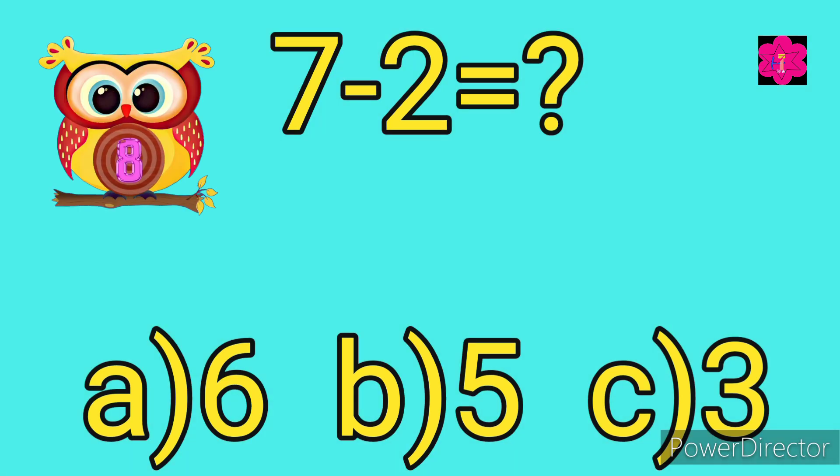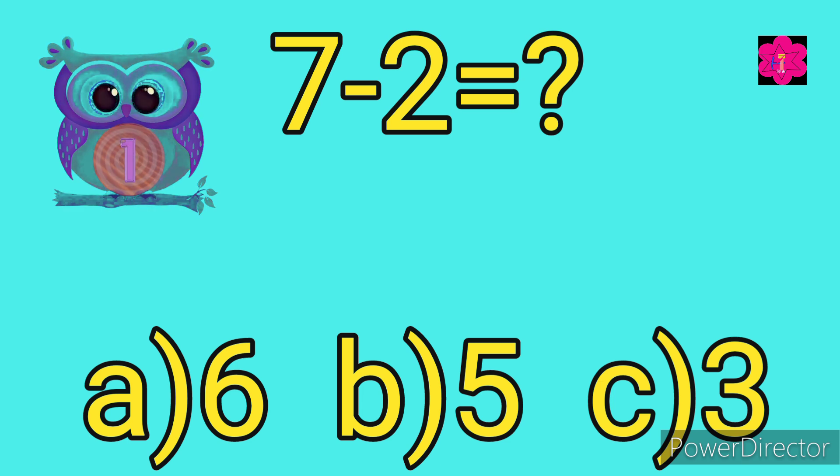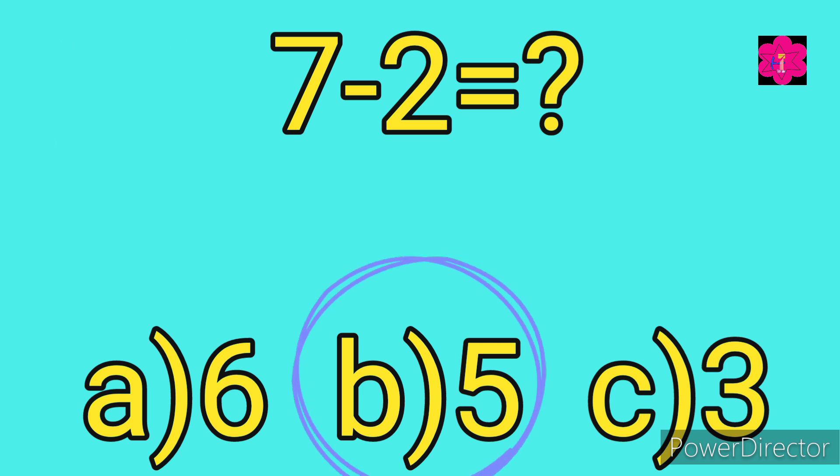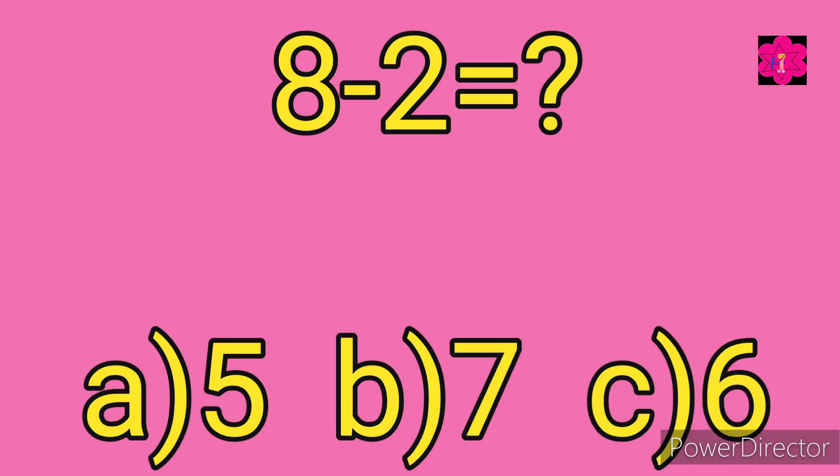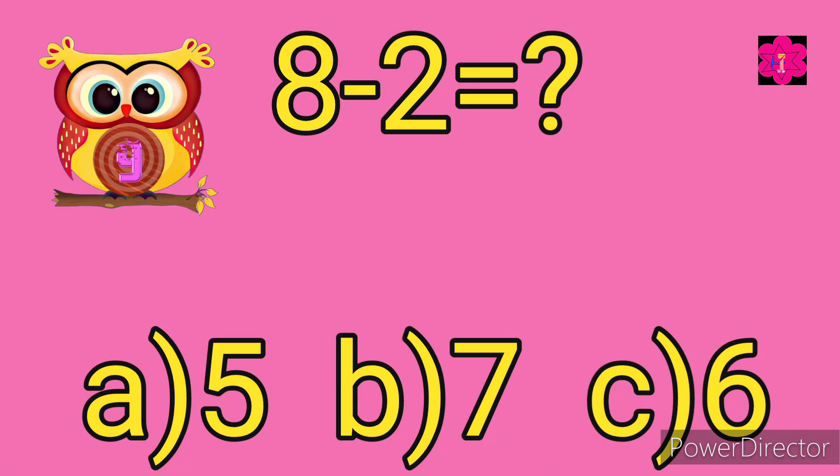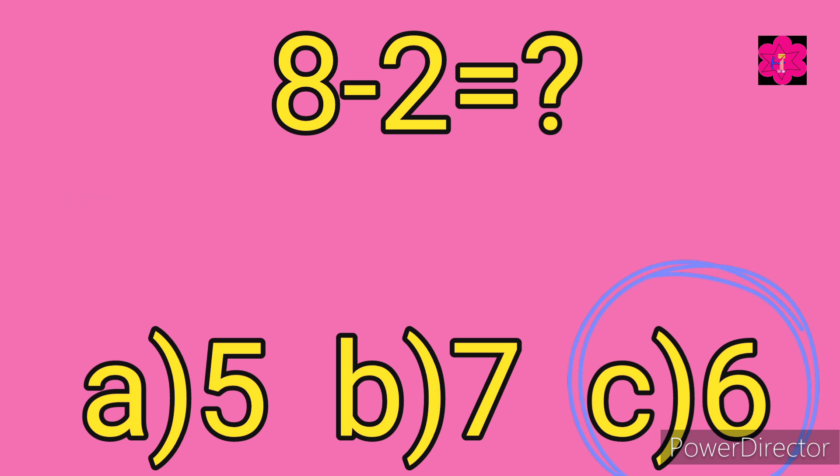Yes, correct answer is b) 5. 7 minus 2 is equal to 5.